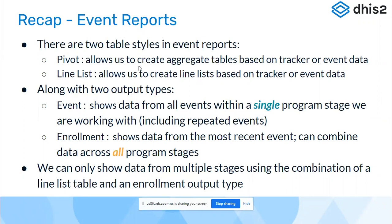We have seen two output types that can be generated: either the event type or enrollment type. The event type would show data from all the events within a single program stage — you were able to select only one program stage per event and see multiple events for that program stage. While for enrollment, we can show data from different program stages, but the enrollment output type will always show the data from the most recent event for a program stage.